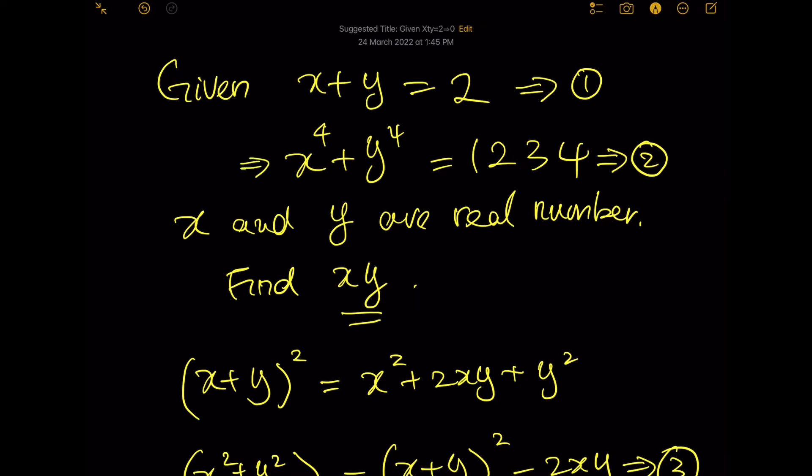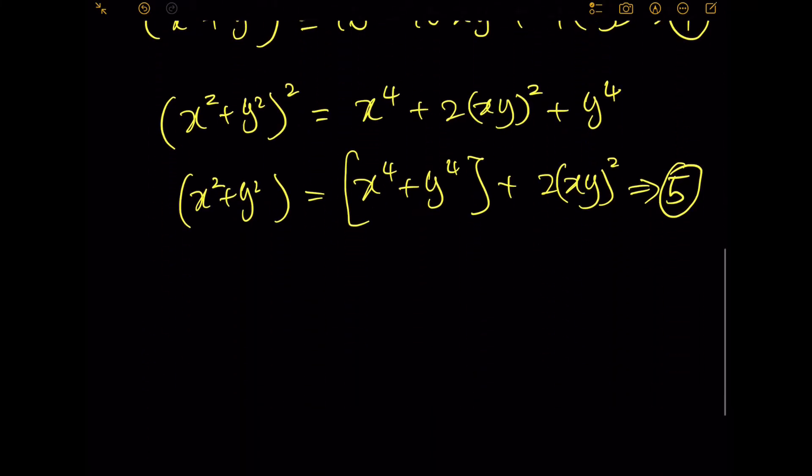x^4 + y^4 is actually equals to 1234. So let's put equation 2 into 5, so you have (x^2 + y^2)^2...